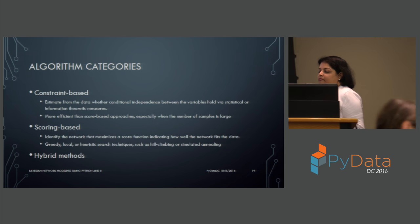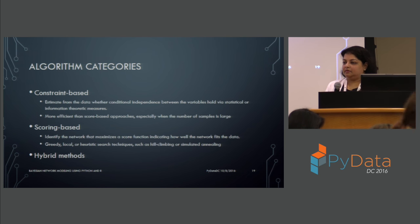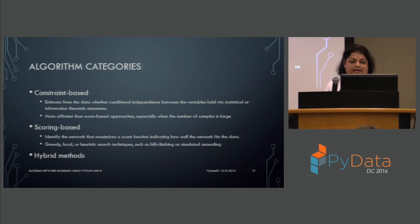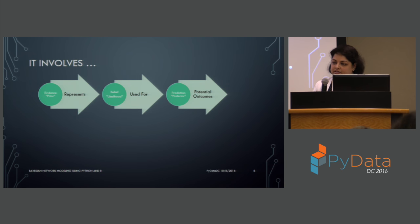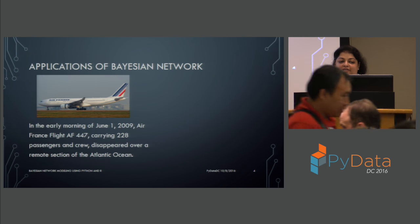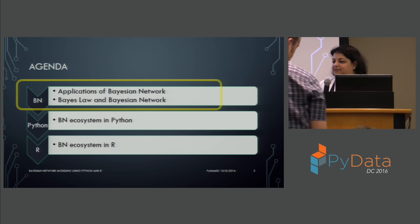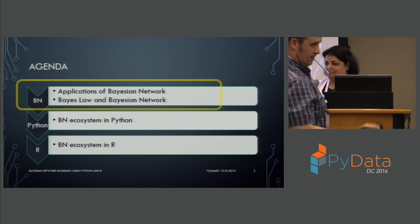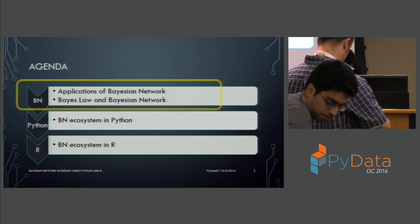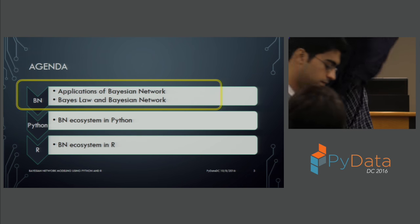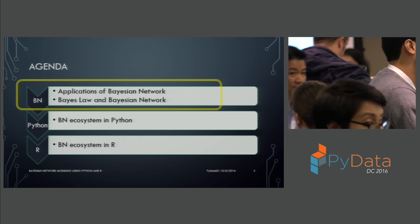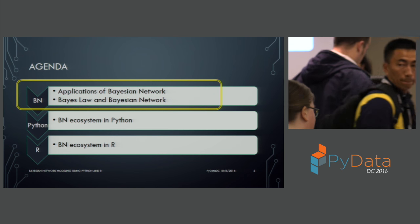A question was asked about data set size from the PhD research. The data set was about 1 million records. The best part of Bayesian networks is that you can run it on multiple nodes — the same algorithm generates the model, then you run it on multiple nodes and get predictions from multiple nodes, making it applicable to big data problems.